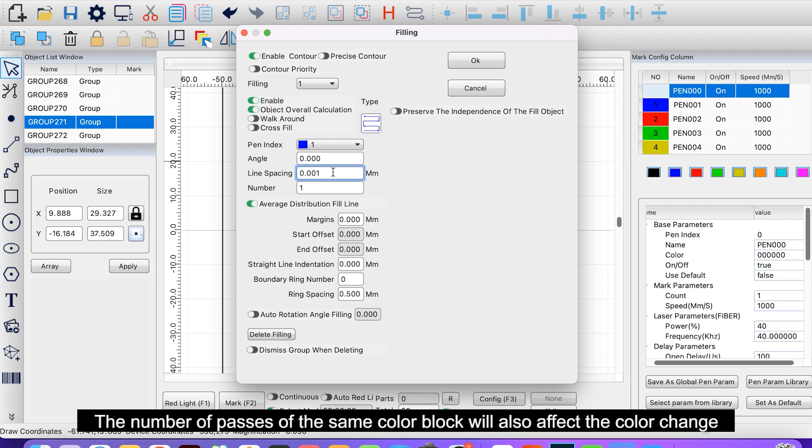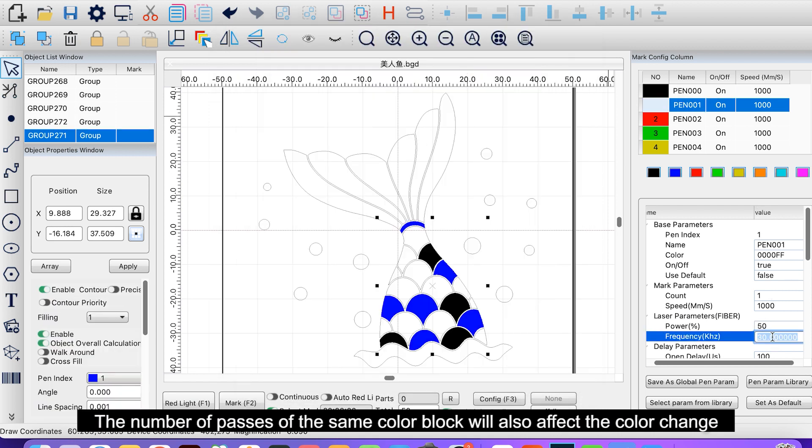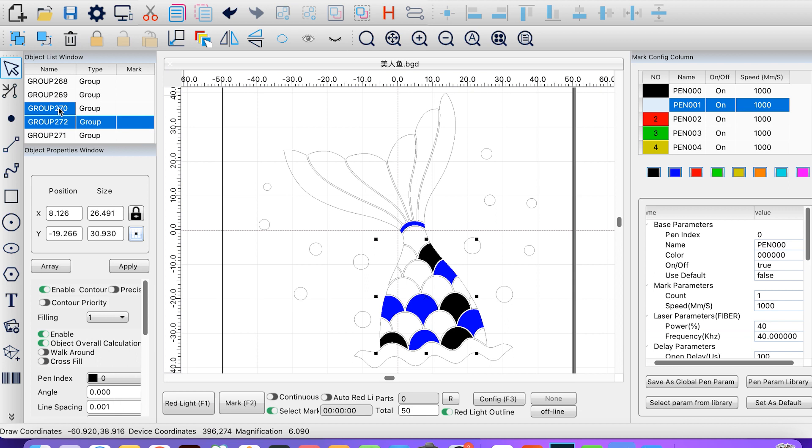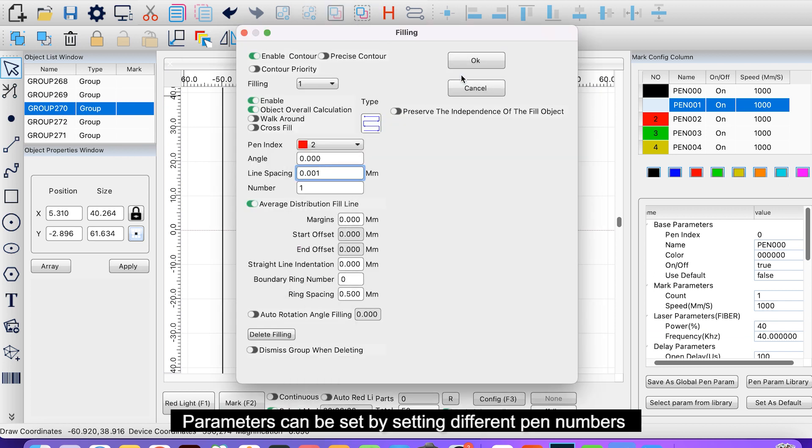Or use cross-filling. The number of passes of the same color block will also affect the color change. Parameters can be set by setting different pen numbers.